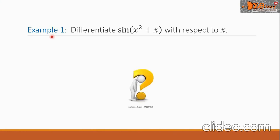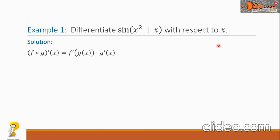Example 1: Differentiate sine of the quantity x squared plus x with respect to x. Let us write the formula for the chain rule. We can see here that the sine is the outside function, and the polynomial x squared plus x is the inside function.